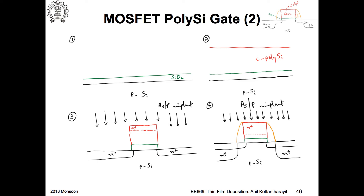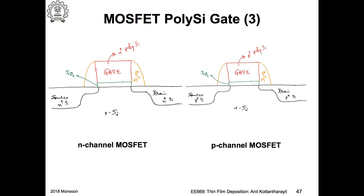This is what you get in this process: N+ source and drain, N+ polysilicon gate. If I make a P-channel transistor on the same wafer, I have N-type silicon — which is made by taking P-type silicon and creating a well by implantation; that well would be N-type silicon.